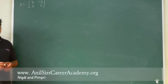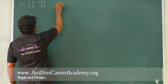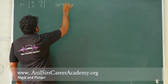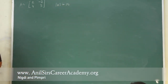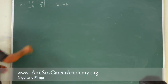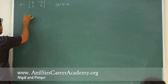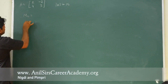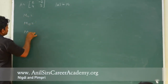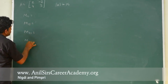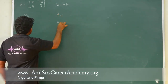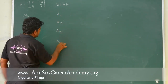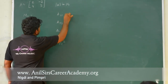Now we will do a 2×2 matrix example. Step one is to find the determinant of the matrix. For a 2×2 matrix with 4 elements, we will have 4 minors: M11, M12, M21, M22, and 4 cofactors: A11, A12, A21, A22.